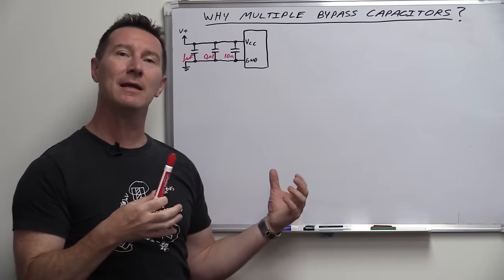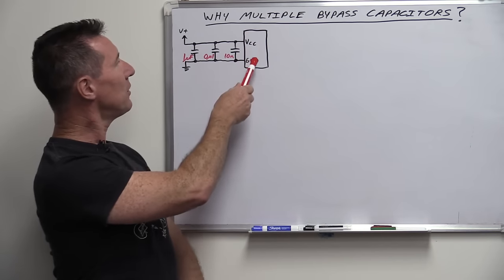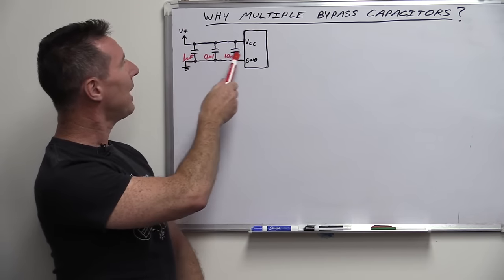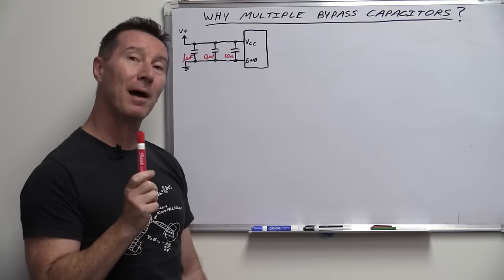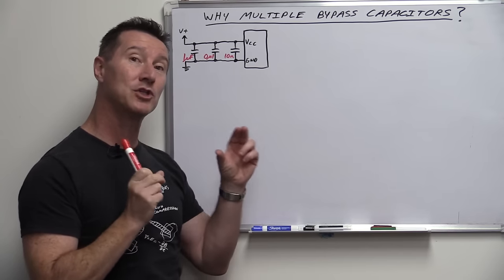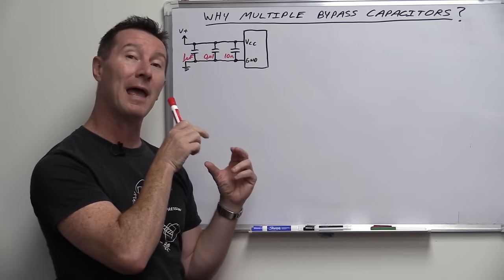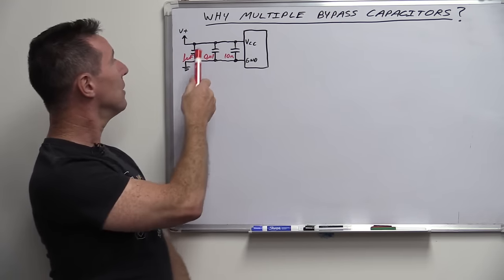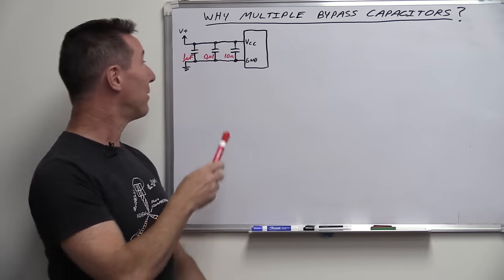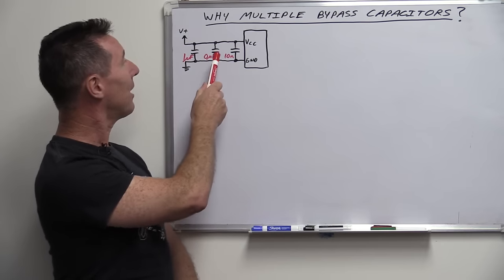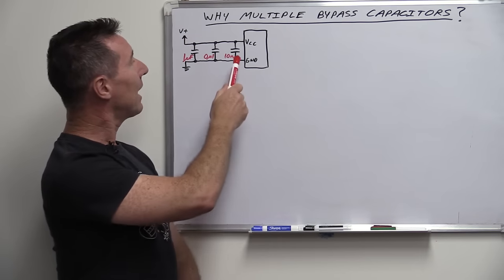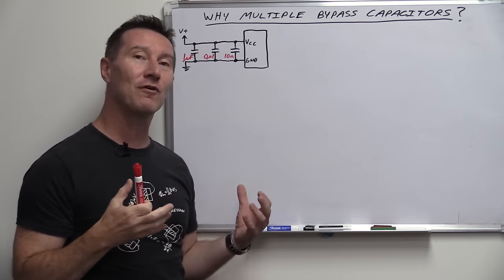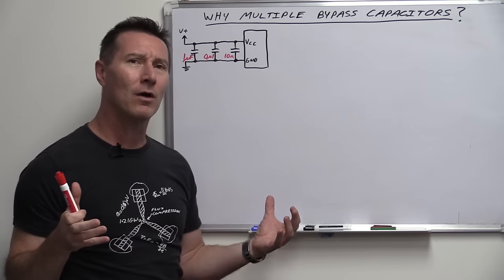You've probably seen this in many circuits where you've got your chip, your power rail, and you might have more than one bypass capacitor on that one chip, or even just that one power rail on a chip that might have multiple power rails. For example, it's not uncommon to find a one microfarad cap, a hundred nanofarad cap, a ten nanofarad cap, or one nanofarad cap — two, three, or four caps in parallel.